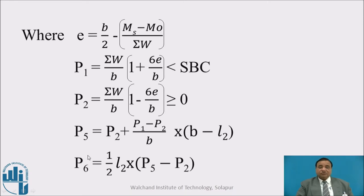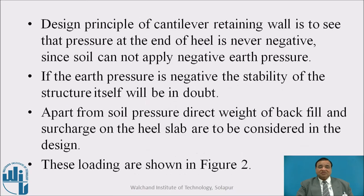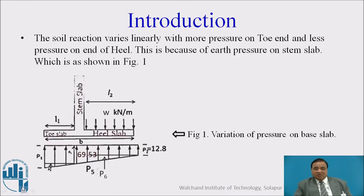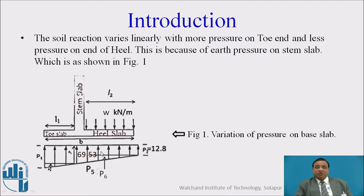I will show all these loads in the figure. P1 is the maximum pressure at the toe end, P2 is the minimum pressure at the heel end. P5 is the pressure ordinate just at the face of the stem slab, and P6 is the pressure at the centroid of the triangular portion. W is acting downwards as a uniformly distributed load. P2 is uniform up to the heel end, and we take moments of P6 about the face of the stem slab.